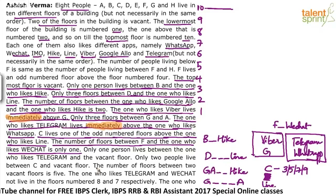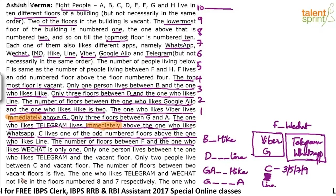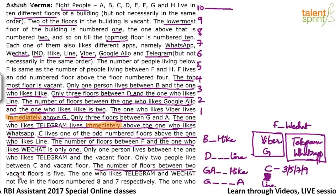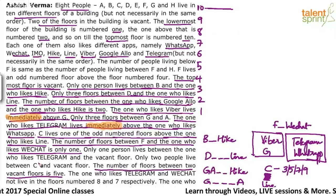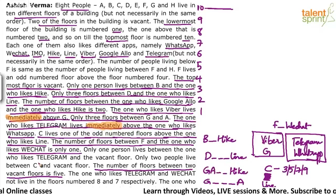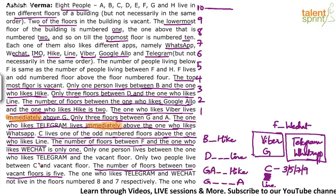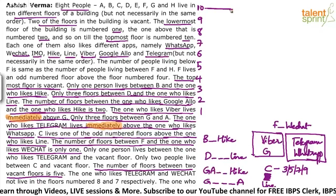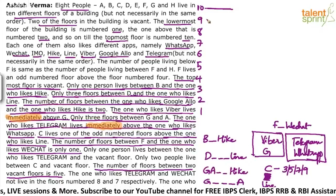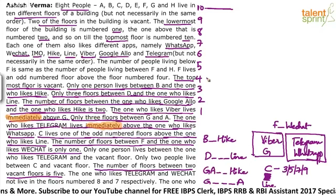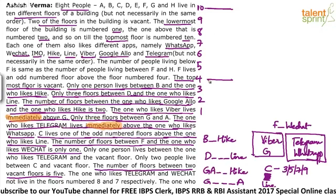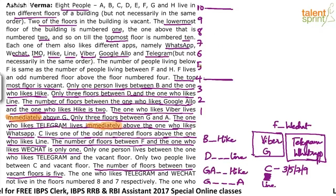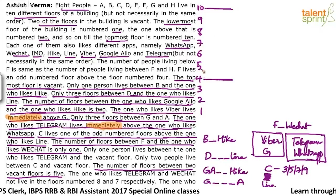The number of floors between the two vacant floors is 5 — that's very interesting and clears up the confusion. We already know the tenth floor is vacant. Counting five floors between the two vacant floors: 1, 2, 3, 4, 5 — so the second vacant floor is the fourth floor. Therefore, floors four and ten are both vacant.